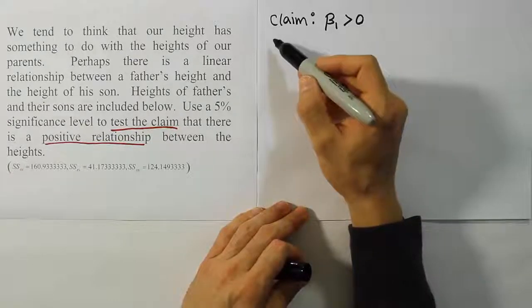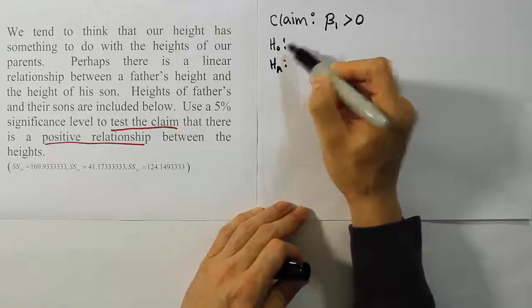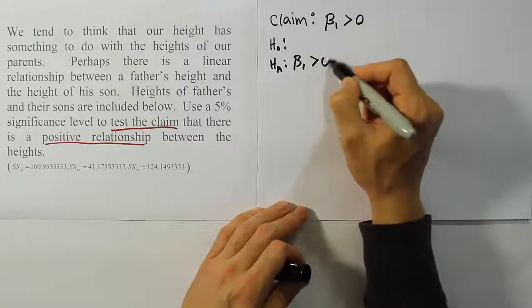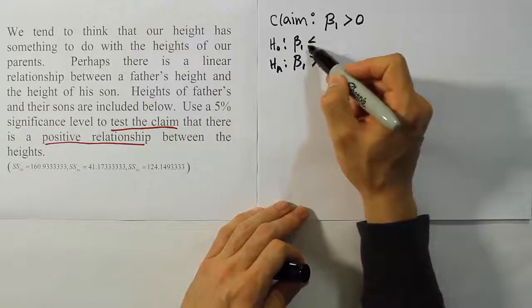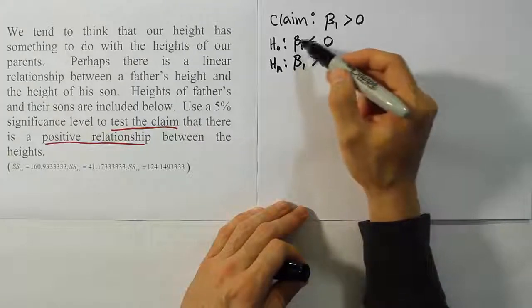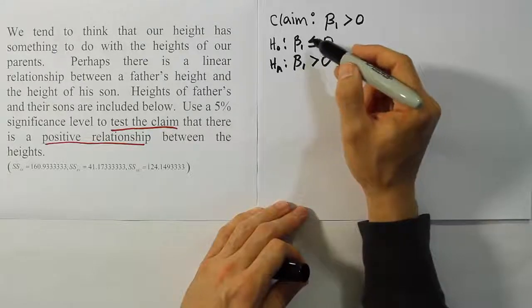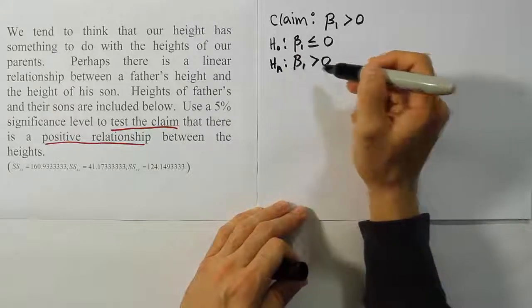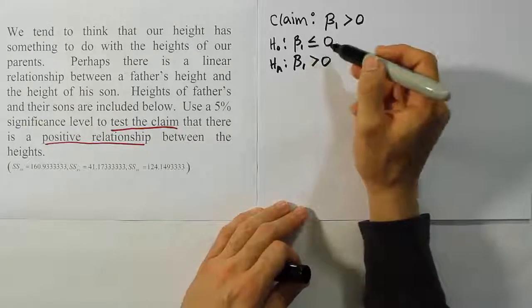Alright, so let's go on then and go to the next step, which is to express H0 and HA. Alright, now, as far as HA goes, it'll be the same as the claim because of the fact that this claim has a greater than symbol. For H0, we're going to have to express the opposite idea, which is that there is a negative or a 0 relationship between the two. To say that the slope is 0 is to say there's no linear relationship between the two. To say that the slope is negative is to say there's a negative linear relationship. So that's H0's argument, basically, because it has to compete against the HA, which is saying a positive relationship. So H0 is saying a negative relationship or no linear relationship.